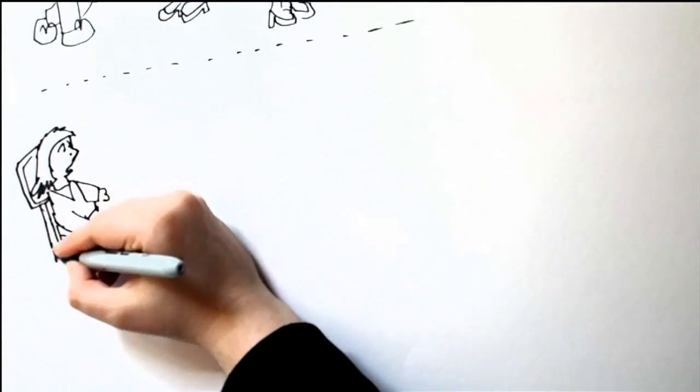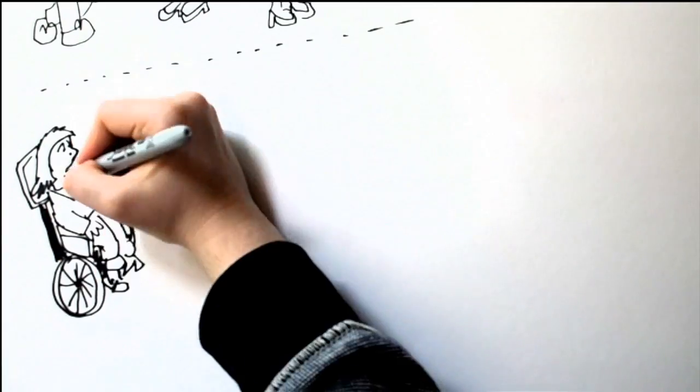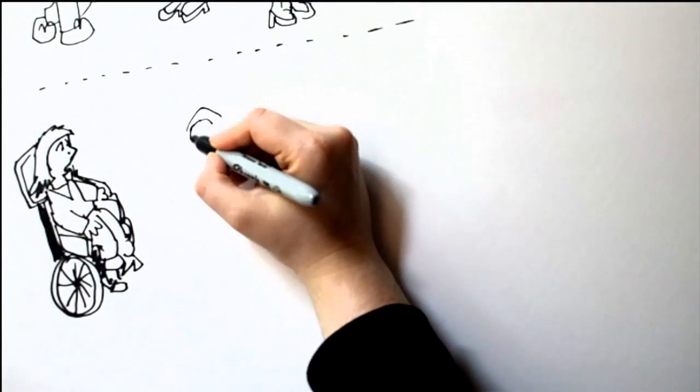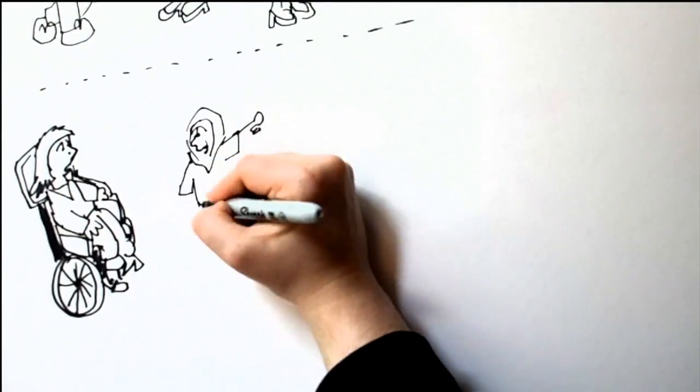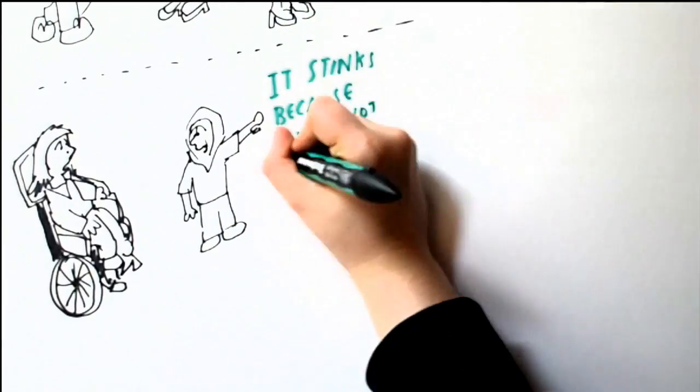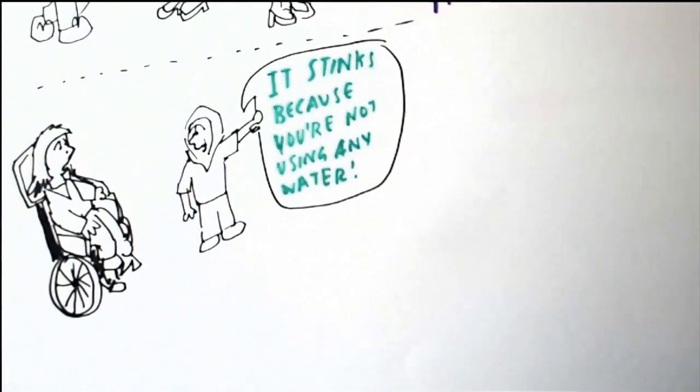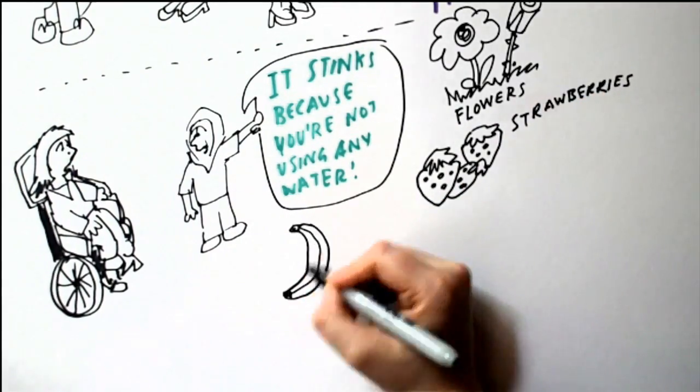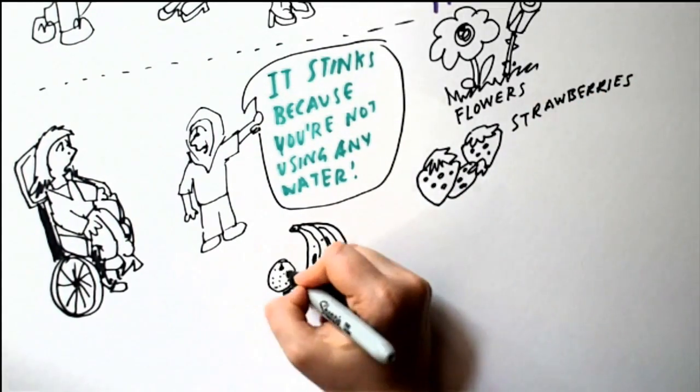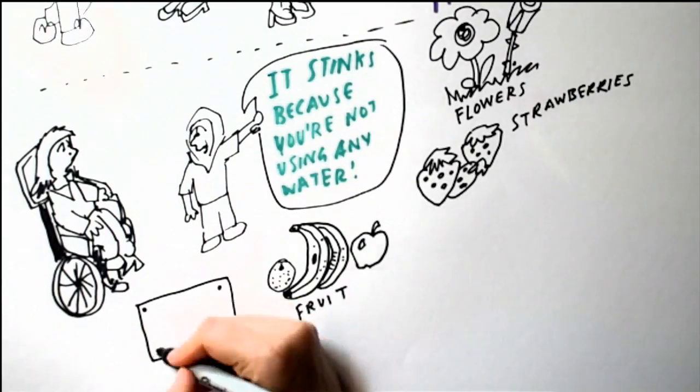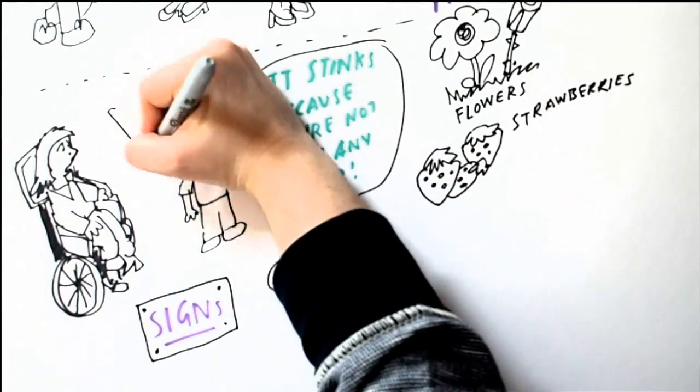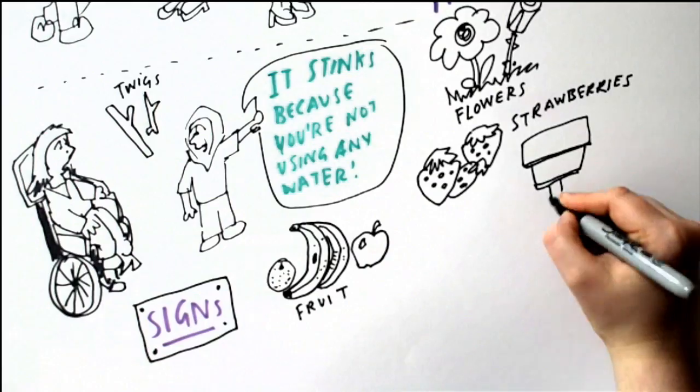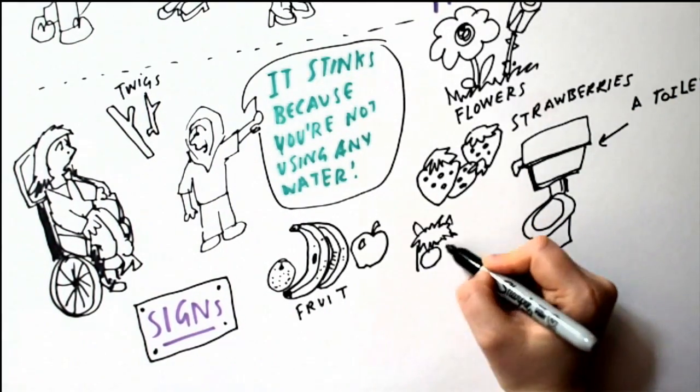What do you think of a compost toilet? It stinks. Is it good for the environment? Yeah, because you're not using any water. It's got flowers, it's got a strawberry, it's got fruit, it's got flowers, it's got twigs, it's got a map, it's got signs, it's got a toilet, it's got an owl.